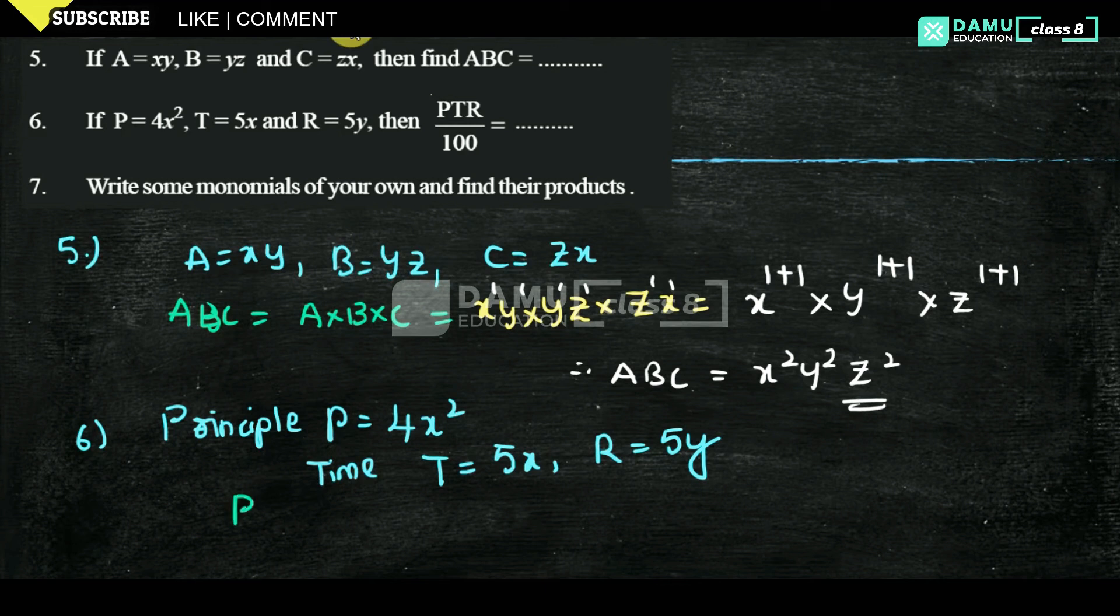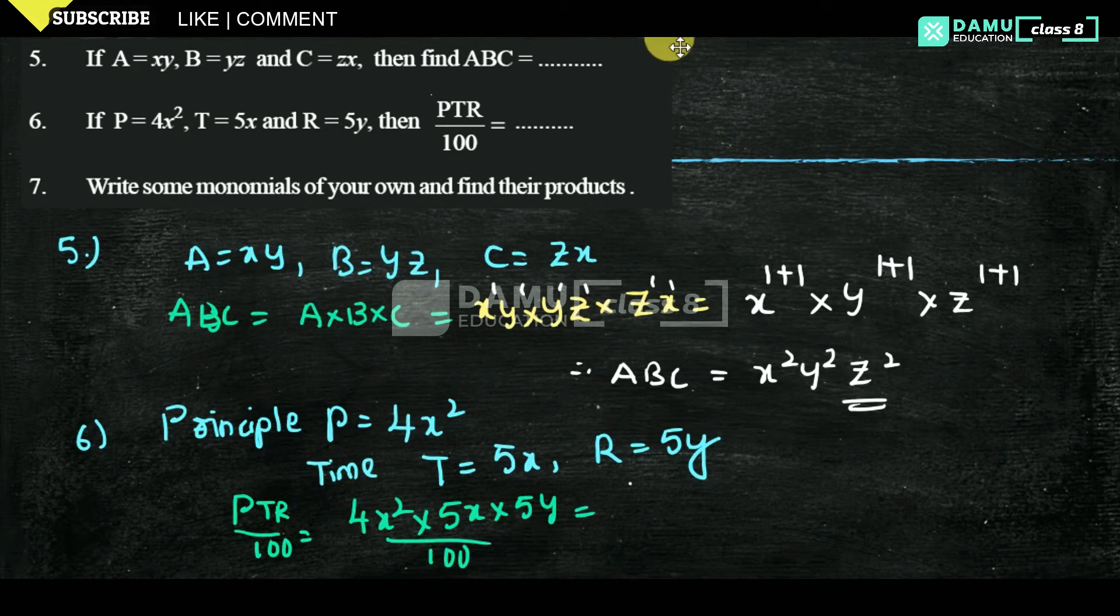What we need to find is PTR by 100. That will be: P will be 4x squared into T will be 5x into R will be 5y, divided by 100. That will be equal to—let us take 4 into 5 into 5. First multiply all the numbers, then multiply with the variables, divided by 100. So 4 times 5 is 20, 20 times 5 is 100.